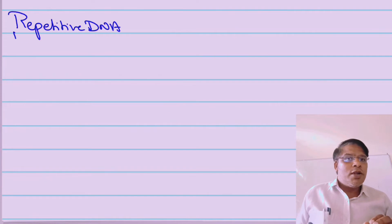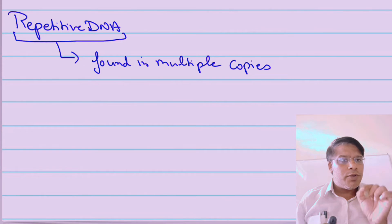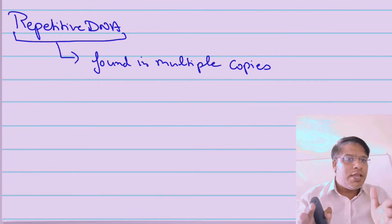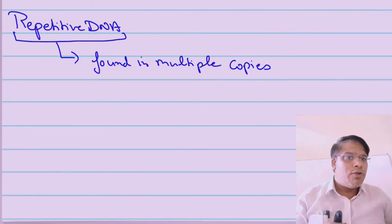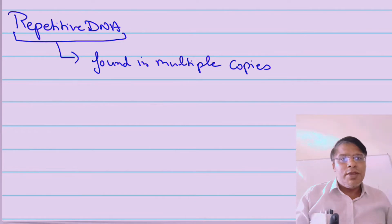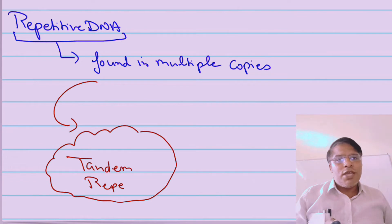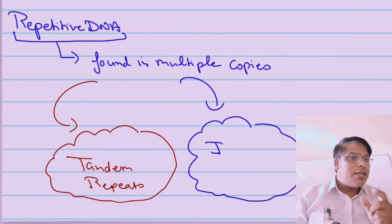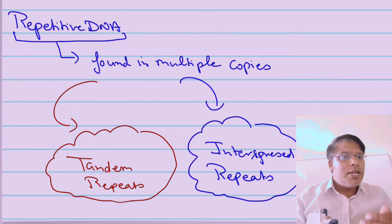Let us understand what repetitive DNA actually is. In the case of repetitive DNA, you are going to see DNA sequences that are present multiple times — you are going to have multiple copies within the genome. Such DNA sequences are known as repetitive DNA. Repetitive DNA can be of two types: one is tandem repeats, and another is interspersed repeats.